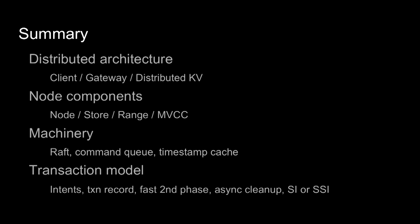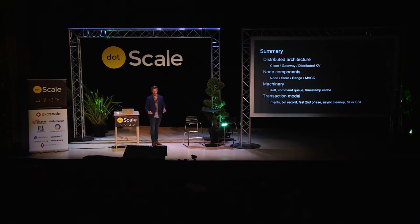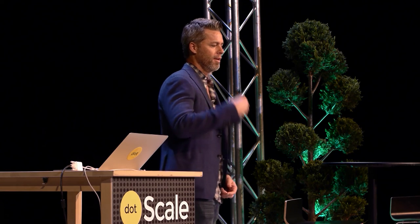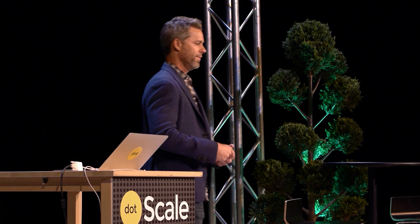Summary: it's a distributed architecture where clients talk to symmetric nodes containing gateways and distributed KV clients. Nodes contain stores; stores have ranges; ranges are replicated with Raft and MVCC to hold multiple versions of values. Raft does synchronous replication. The command queue orders things by dependencies. The timestamp cache avoids rewriting history. The transaction model uses intents — provisional writes — and a transaction record as a single source of truth, with a fast second phase that only updates the transaction record without a synchronous round to all participants, followed by asynchronous cleanup. Two isolation levels are supported: snapshot, which handles contention better, and serializable, the strongest level.